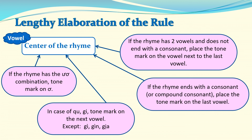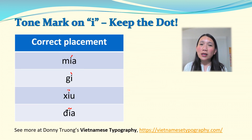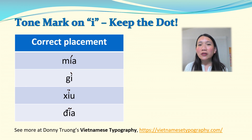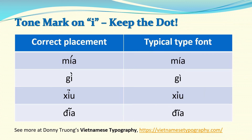Let's touch on the typography of the tone mark on the letter I. When you place a tone mark on the letter I, keep the dot. The tone mark is meant to be placed on top of the dot of the letter I, not to replace it. This is the correct Vietnamese way. Unfortunately, most typical type fonts replace the dot of the letter I with the tone mark. When writing by hand, you should keep the letter I's dot and place the tone mark on top of it, not in place of the dot.